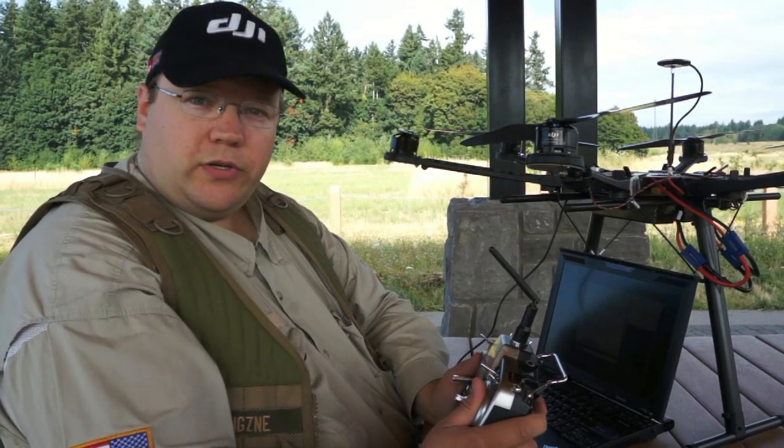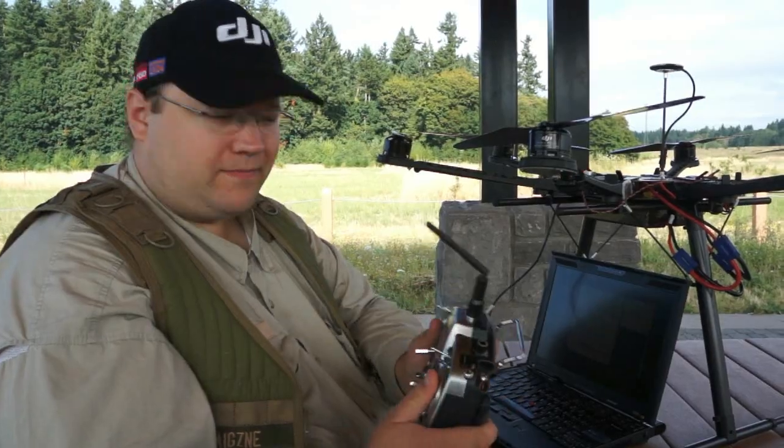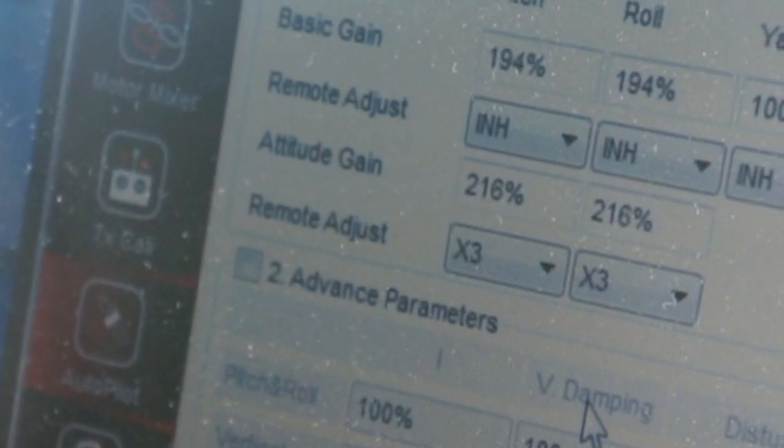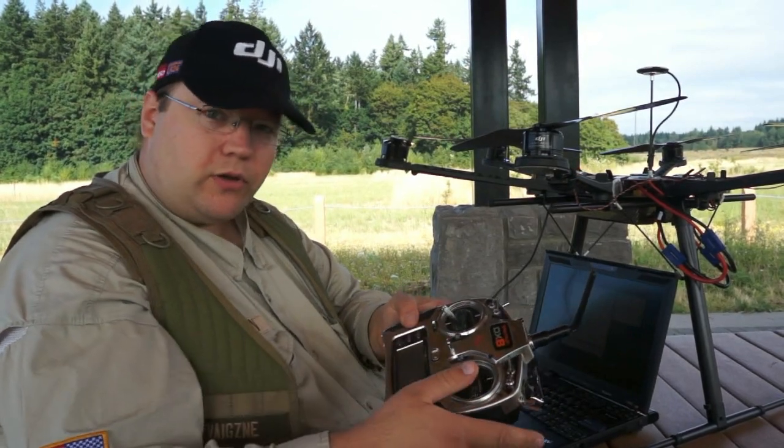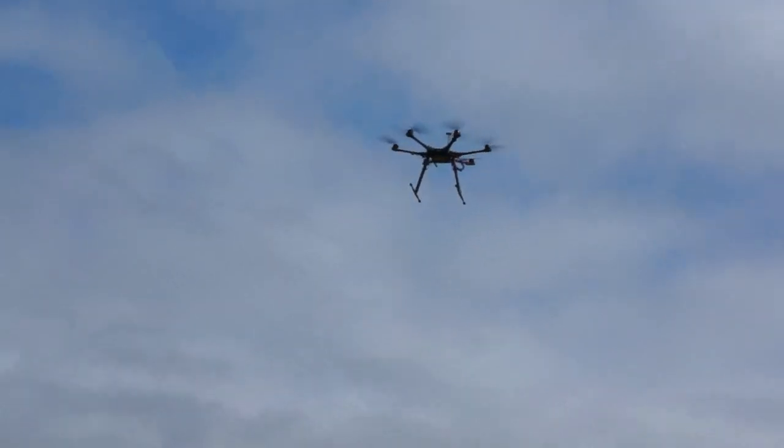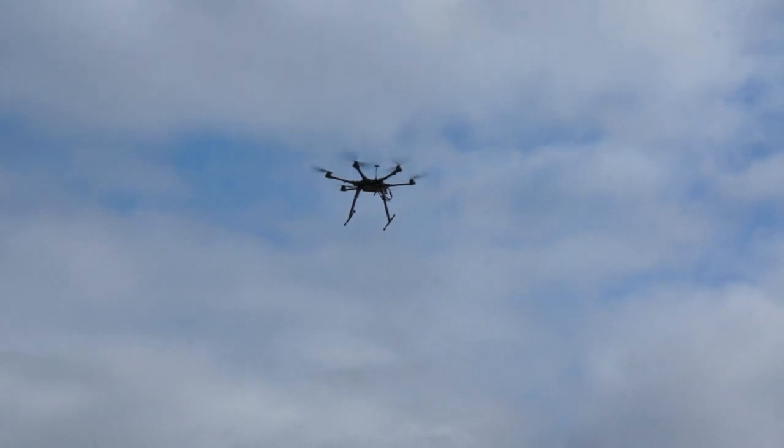So next thing we're going to do is bind the knob to the attitude gain, which basically is how fast it responds to your stick inputs. So quick and snappy, or kind of slow and smooth. What I want to achieve here is to get the controls to respond quickly, but not too quickly. Too slow, it'll become dangerous because you can't stop it from going a certain direction, you can't change angles quickly enough. Too high, it's a little too responsive, and a little twitch in your radio will cause it to kind of wobble about a bit.